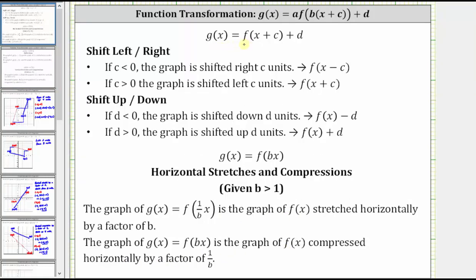If we have g of x equals f of the quantity x plus c, the value of c indicates a shift left or right. If c is less than zero or we have subtraction, the graph is shifted right c units. If c is greater than zero or we have addition, the graph is shifted left c units. Notice how the shift left or right might be in the opposite direction we think, because if we have subtraction the graph is shifted right, and if we have addition the graph is shifted left.